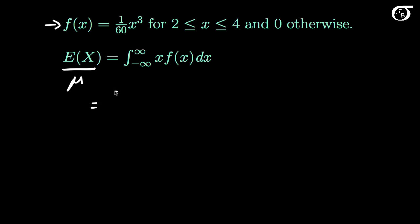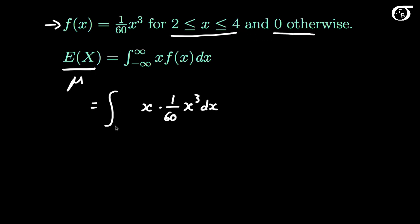Here we're going to integrate x times 1 over 60 x cubed dx. But we're not going to integrate this between minus infinity and infinity, because this is only the PDF between 2 and 4. Outside of 2 and 4, it's 0. So we integrate this between 2 and 4, because the integral from minus infinity to 2 is 0, and from 4 to infinity is also 0.